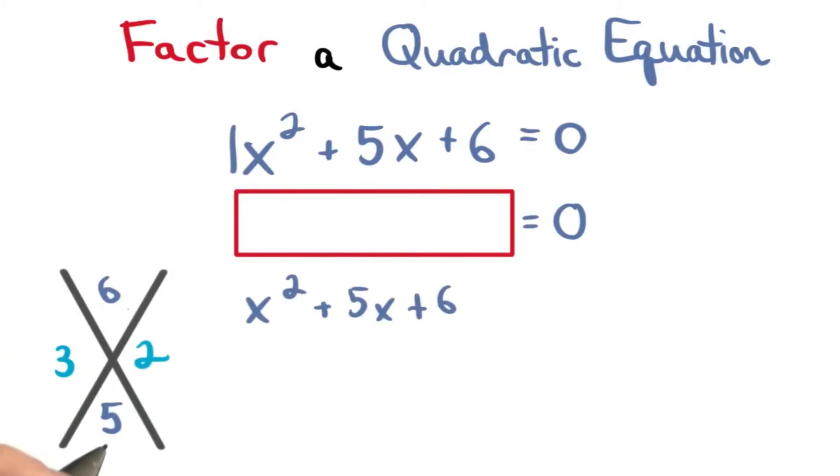I know 3 and 2 are factors of 6 that add to 5, so I can use those to rewrite my middle term.